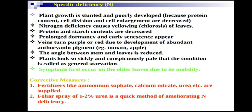Corrective measures include fertilizers like ammonium sulfate, calcium nitrate, urea, and calcium ammonium nitrate (CAN), which is also important for improving soil structure. Foliar spray of one to two percent urea is a quick method of ameliorating nitrogen deficiency.